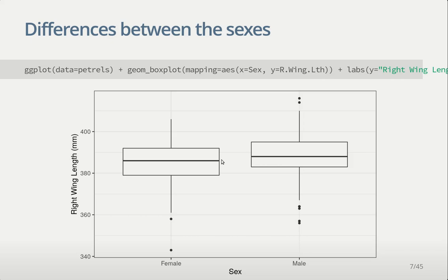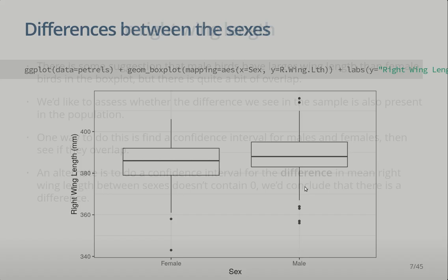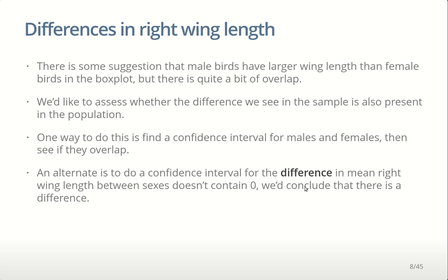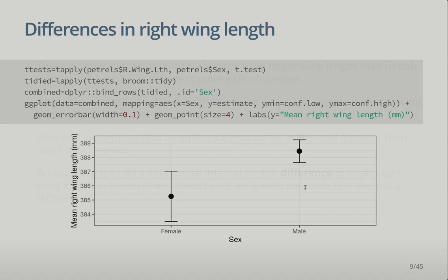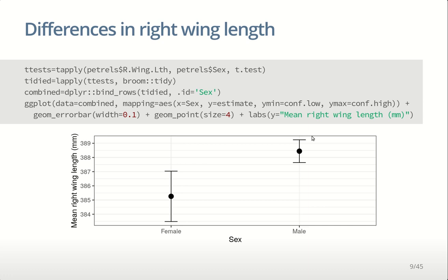Let's look at an example with the petrels from lab three. We looked at right wing length and saw perhaps a small difference between males and females — the distributions look really similar, about the same range and shape, but the male distribution has been shifted up a little. One way to check if this difference is present in the population is to find a confidence interval for males and one for females and see if they overlap. We can see that there's no value for mean right wing length that is inside both intervals, so we have some evidence that males are bigger than females.